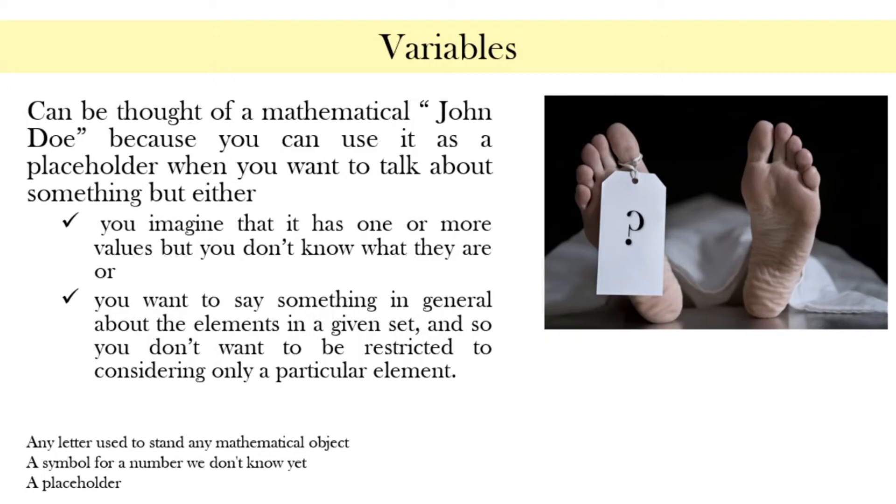Variables can be thought of this way. It is a placeholder when you want to talk about something but you imagine that it has one or more values but you don't know what they are. For instance, I would let X be the next president of the Philippines. Since I don't know who is the next Philippine president, I would just call him or her X. I would like to propose to President X that the following community programs be supported.